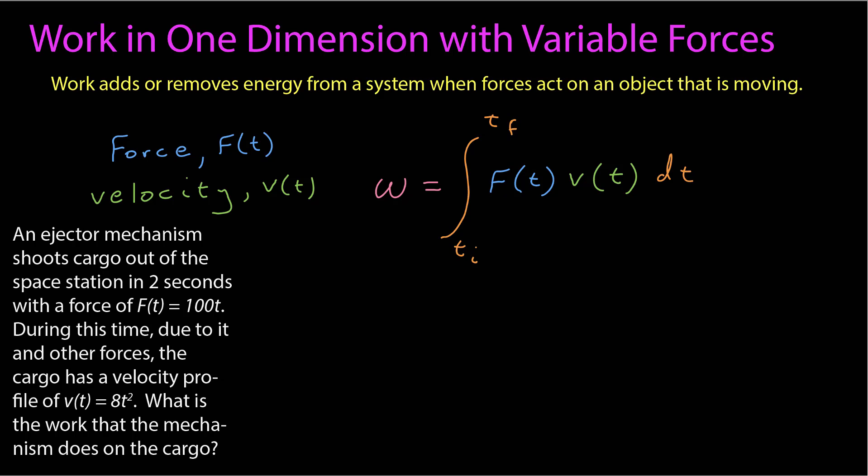So let's look at it in action. I have an ejector mechanism that shoots cargo out of a space station in two seconds. It has a time varying force of 100 times t, and there are other forces on this object. We know that the velocity during these two seconds of the object as it leaves is 8t squared. What is the work that the mechanism does on the cargo?